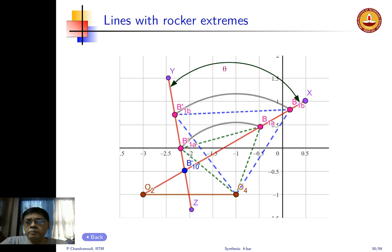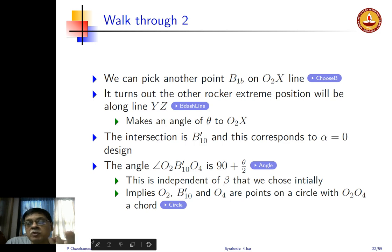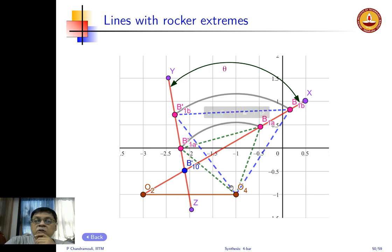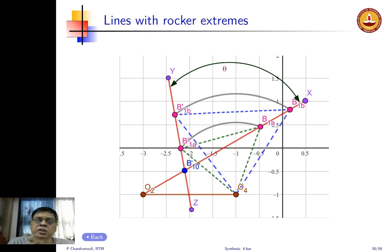Any intermediate choice along O2X gives another valid design. There is a special intersection point between the Y line and the O2X line, which I will call B'10 — zero because it is a special case. This intersection point corresponds to an alpha equal to zero design. I could choose B'10, connect it, draw an arc, and get B10 — the other rocker extreme at angle theta. You can see that the various designs correspond to different alphas, so we need to generalize this to get the specific alpha we have chosen.